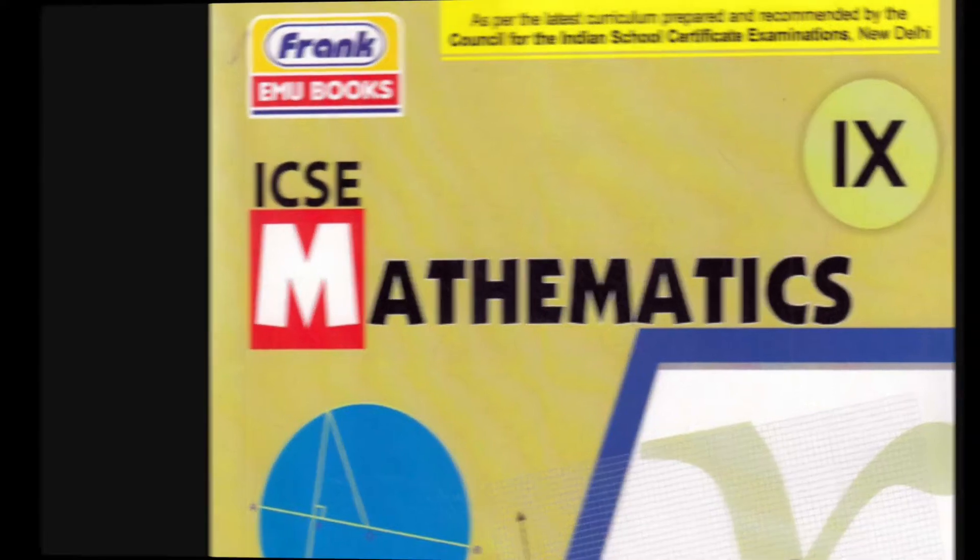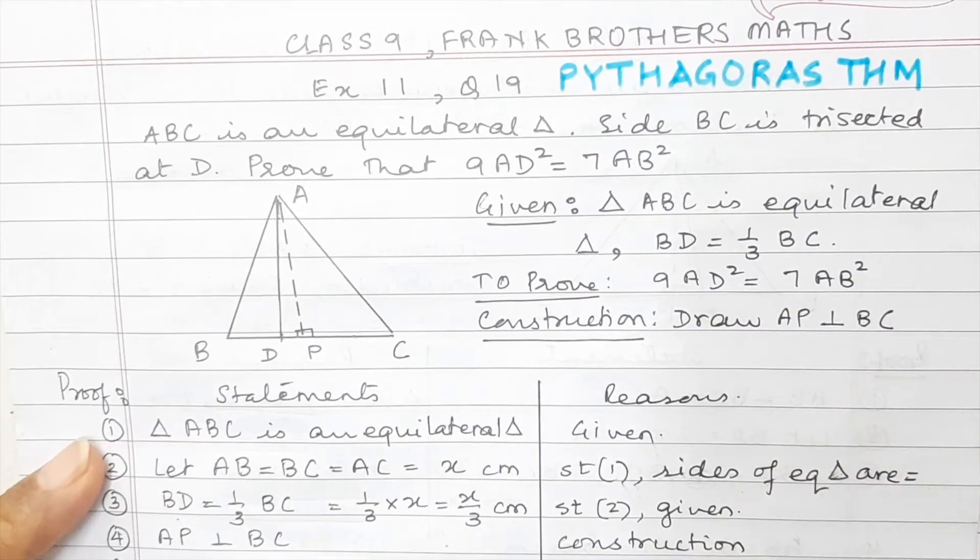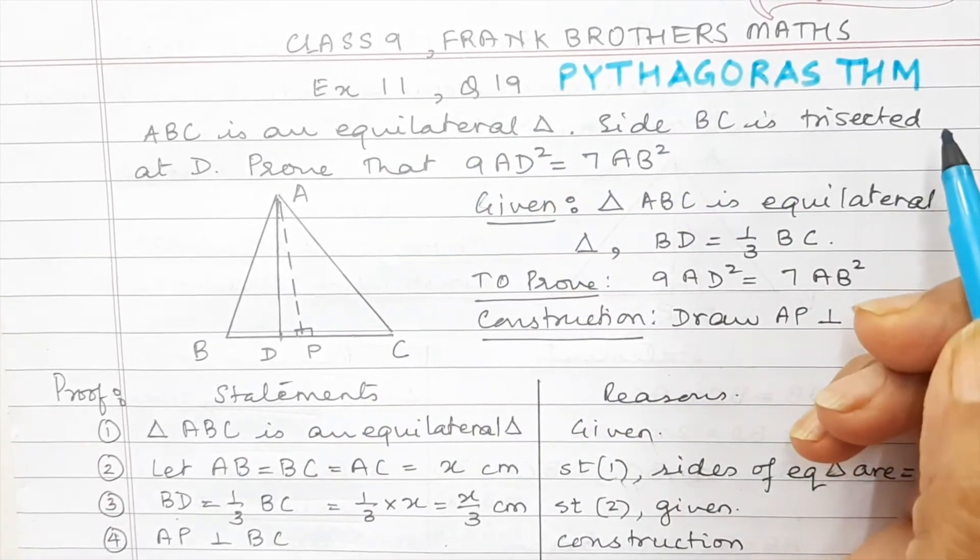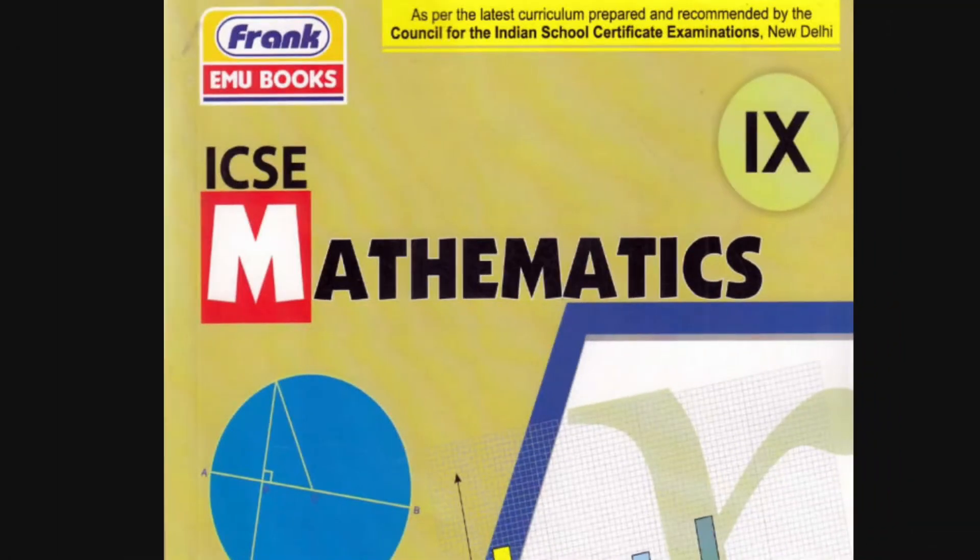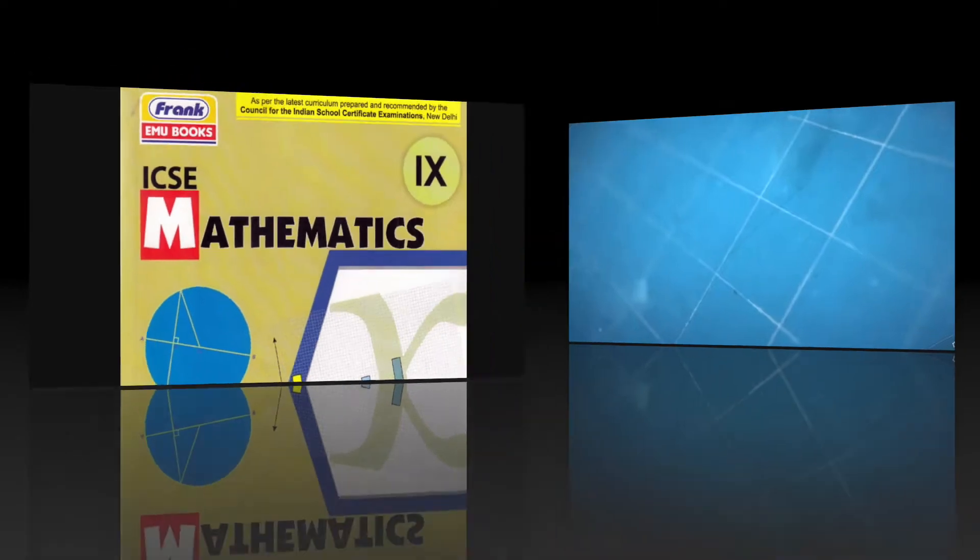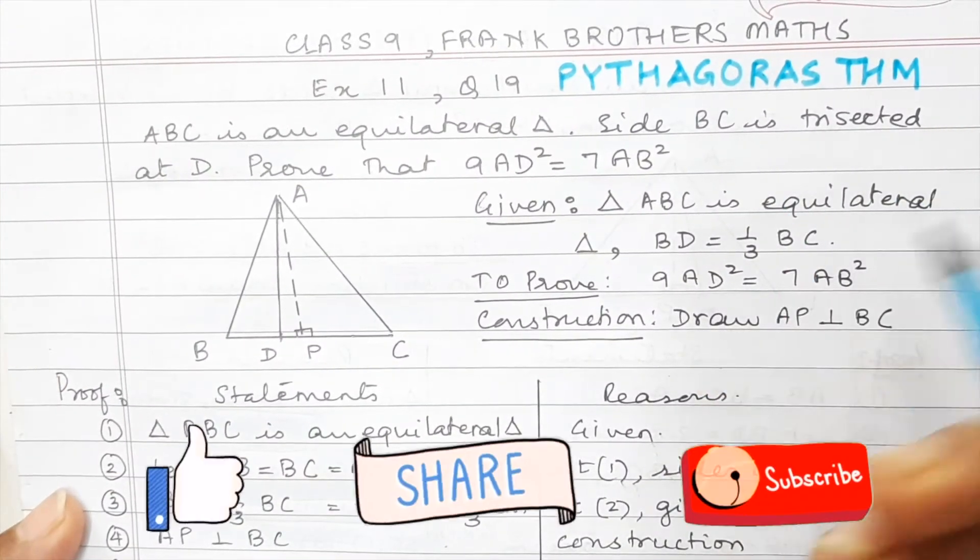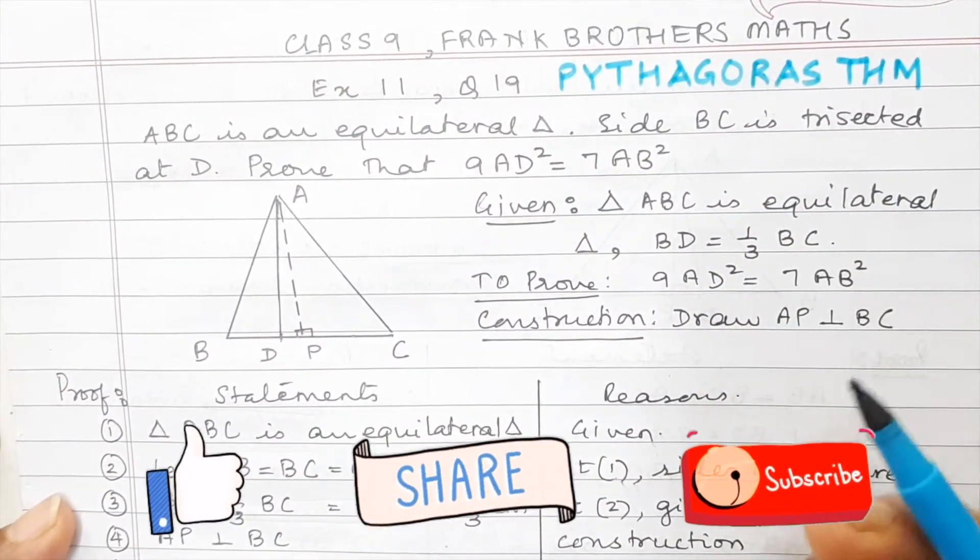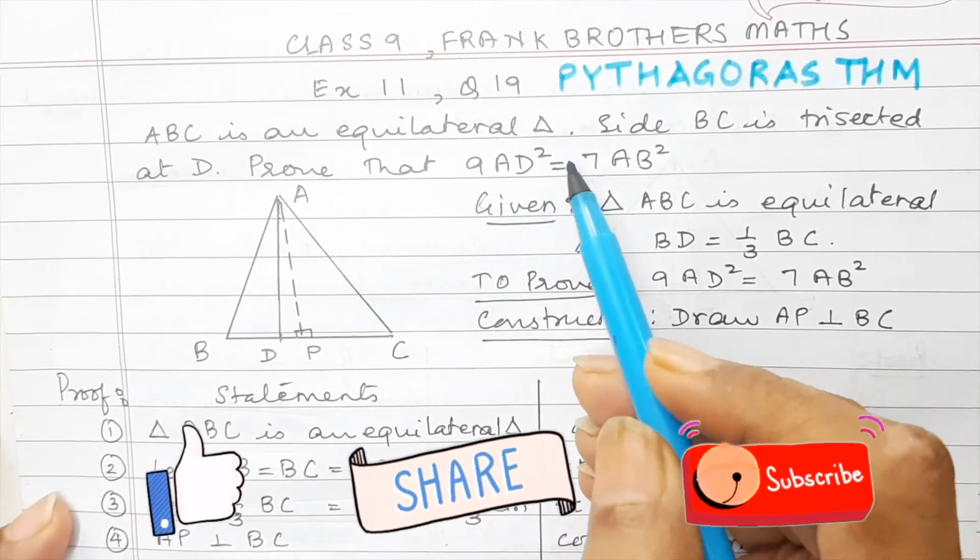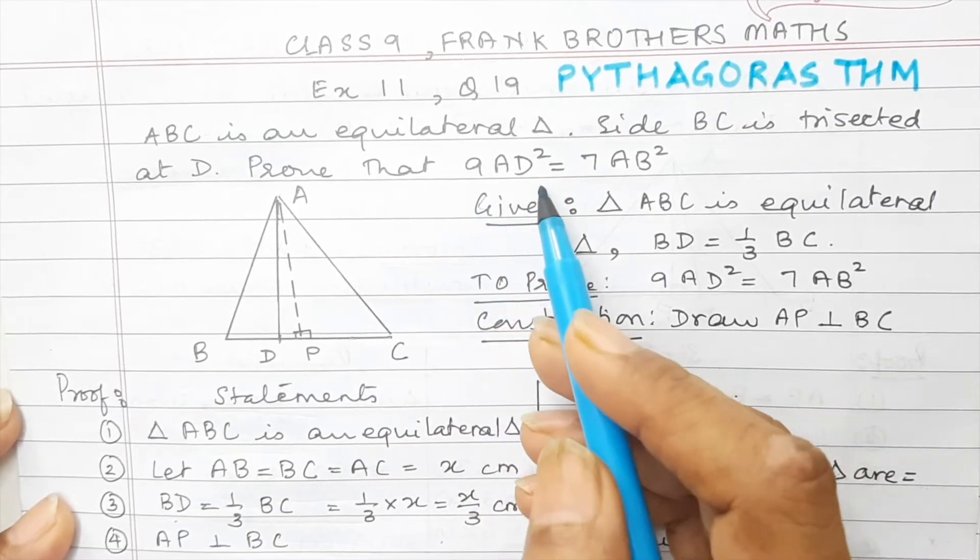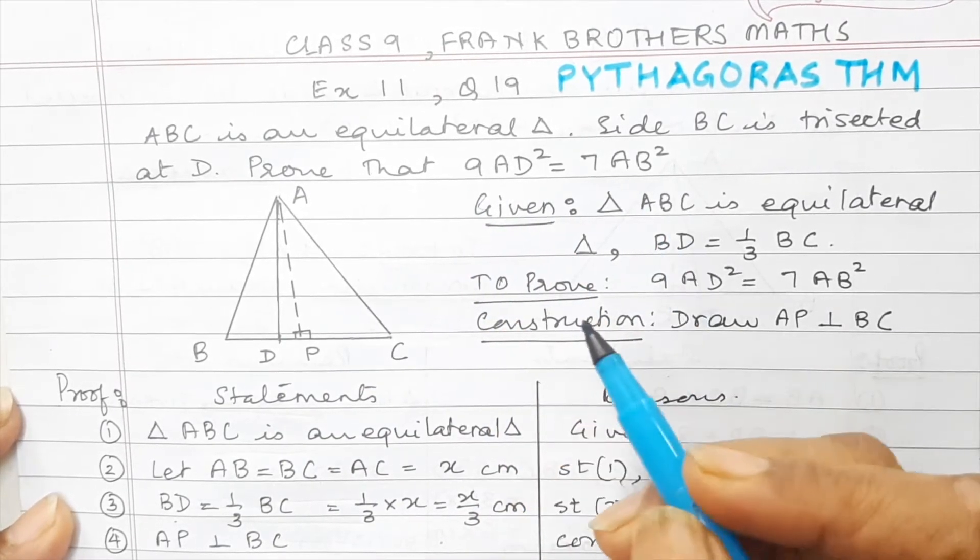Hi, my class 9 friends. We are going to solve question 19 of exercise 11, which is Pythagoras theorem exercise from Frank Brothers publication of class 9 pre-birth maths. So many children have told me that they find this difficult. So let us just go through this. ABC is an equilateral triangle. Side BC is trisected at D. Prove that 9AD square is equal to 7AB square.